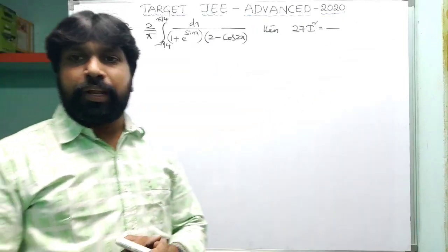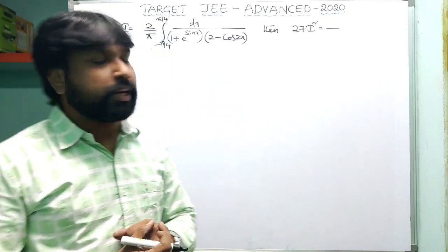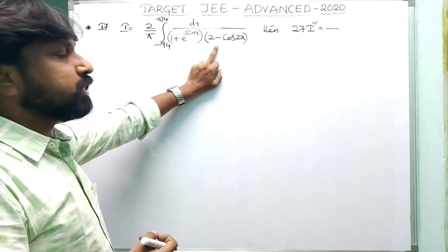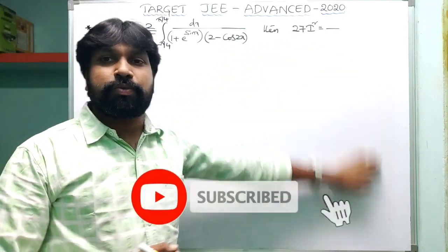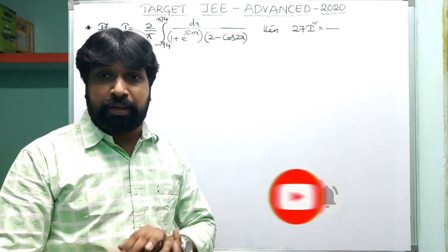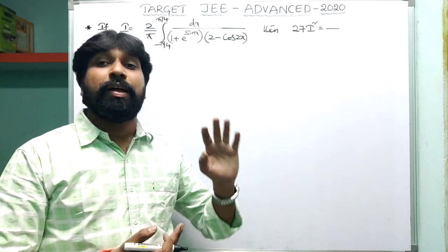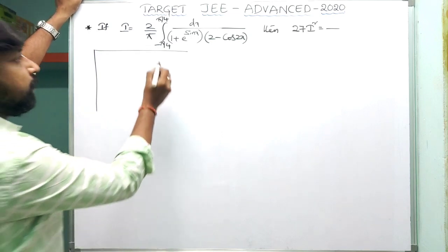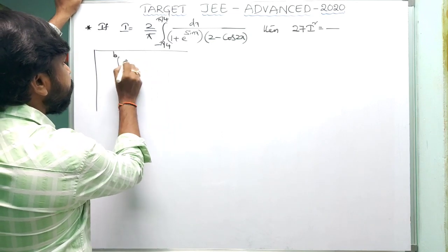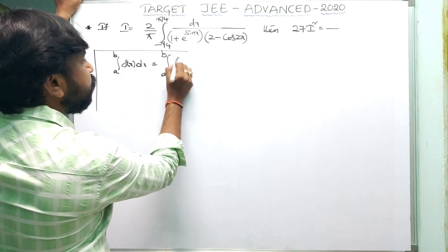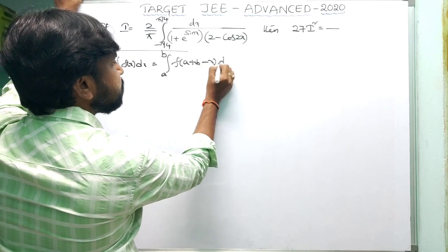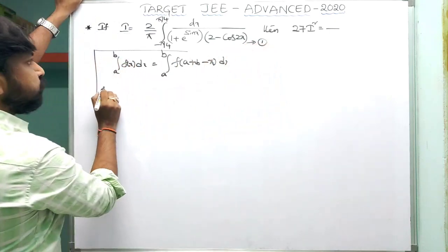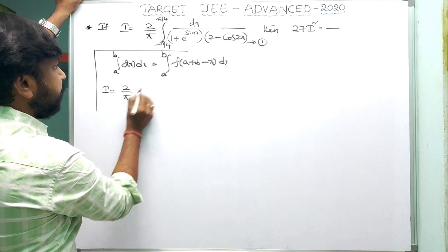Moving to the next question from JEE Advanced 2019: I = (2/π) × integral from −π/4 to π/4 of dx / [(1 + e^sinx)(2 − cos2x)], and they ask for 27I². This is based on definite integration properties. If you know the property integral from a to b of f(x)dx = integral from a to b of f(a+b−x)dx, you can solve it easily.